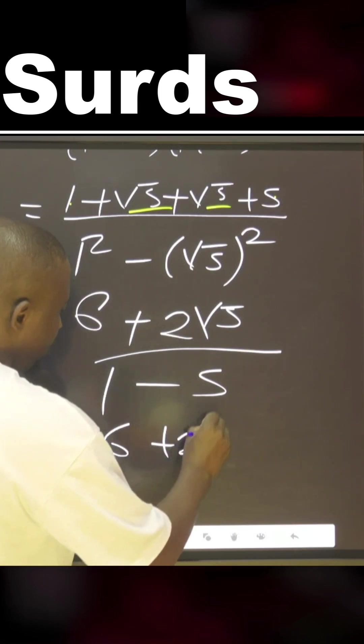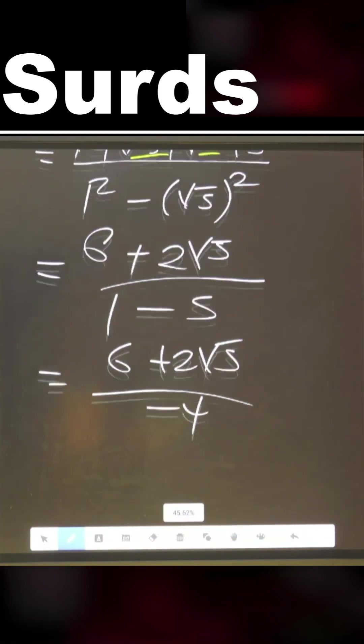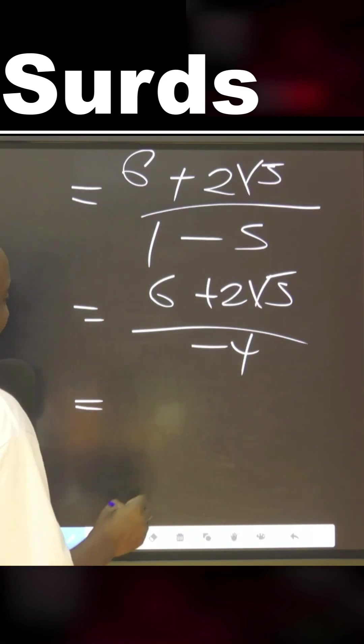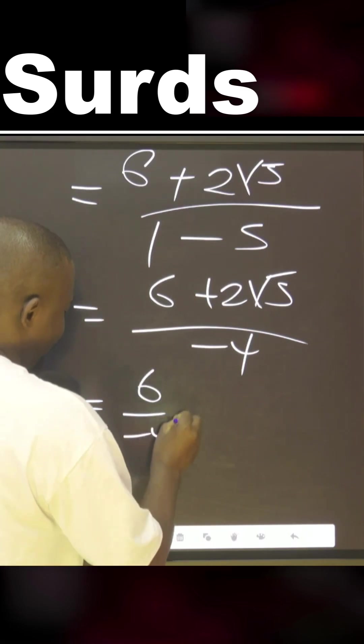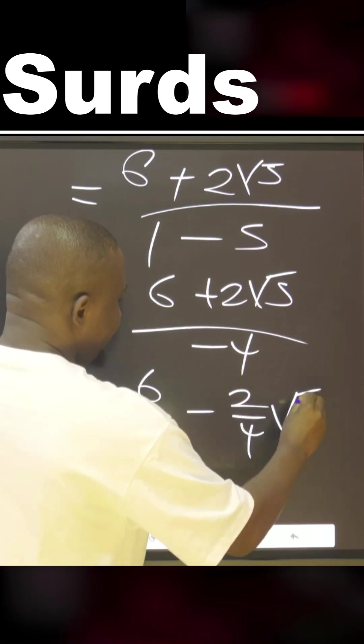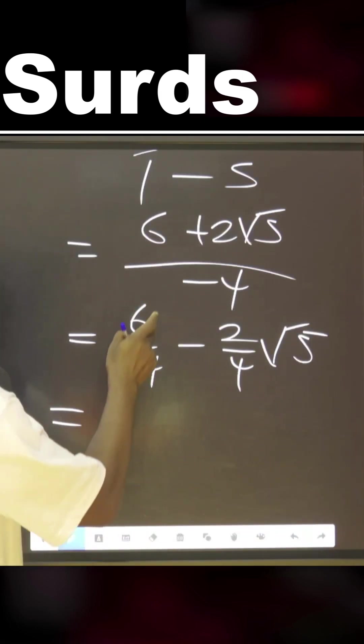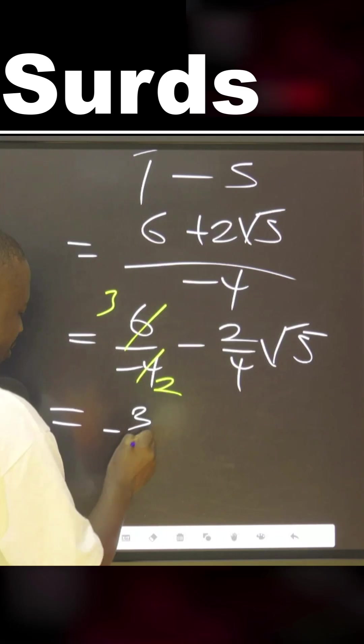Equal to six minus two square root of five over minus four. Okay, so what we can do here to simplify this is simply say six over minus four minus two over four square root of five. This for this, this for this. You agree with me? Two here is three, two here is two. That is minus three over two.